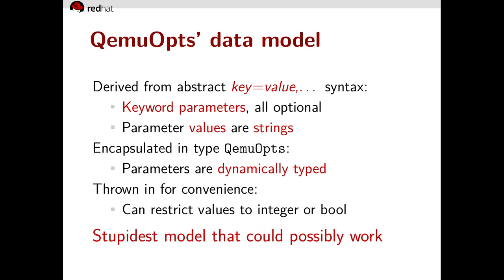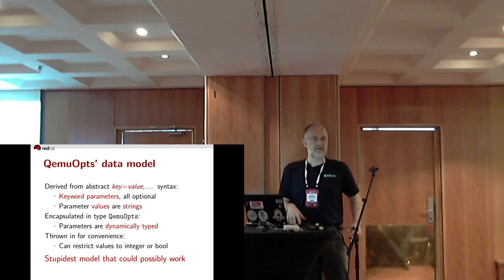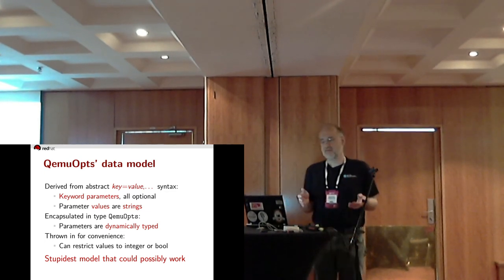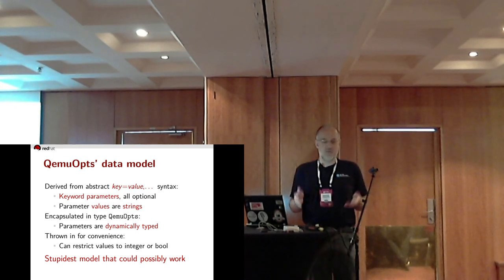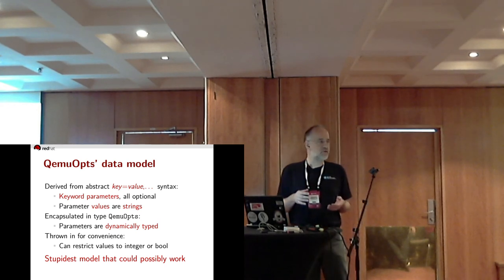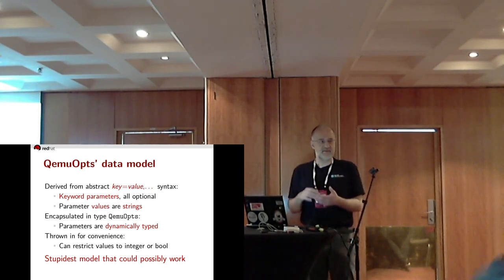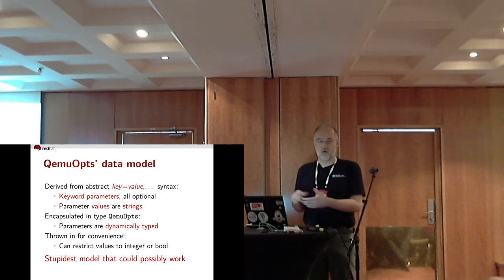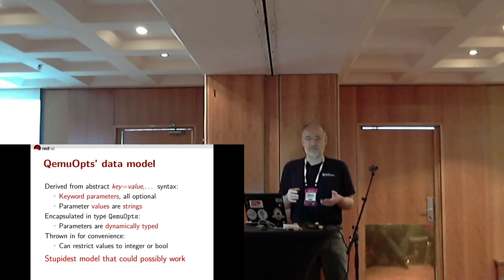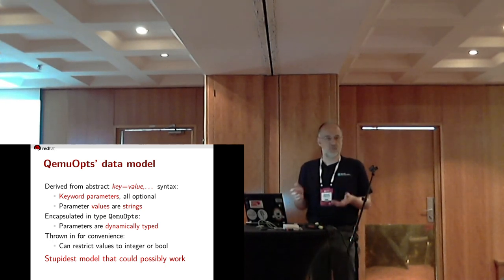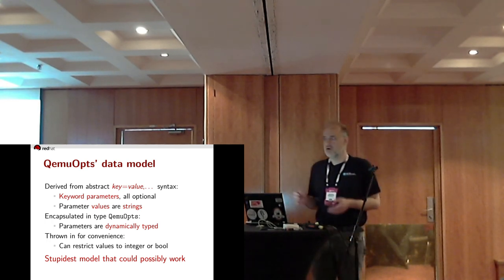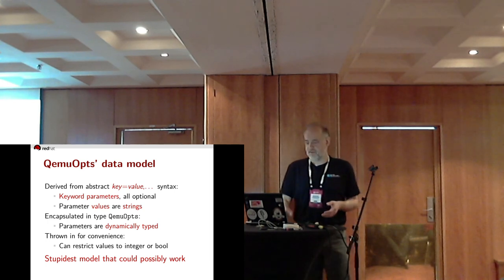Let's look into QEMUopts' data model. It is derived from the abstract key-equals-value syntax, so it is a list of keyword parameters — all optional, with string values. The whole list is encapsulated in the C type QEMUopts. That means option parameters are all dynamically typed. For convenience we throw in a feature to restrict values to integer or bool. This is about the stupidest model that could possibly work, and I have a lot of respect for that — you should always try that first.